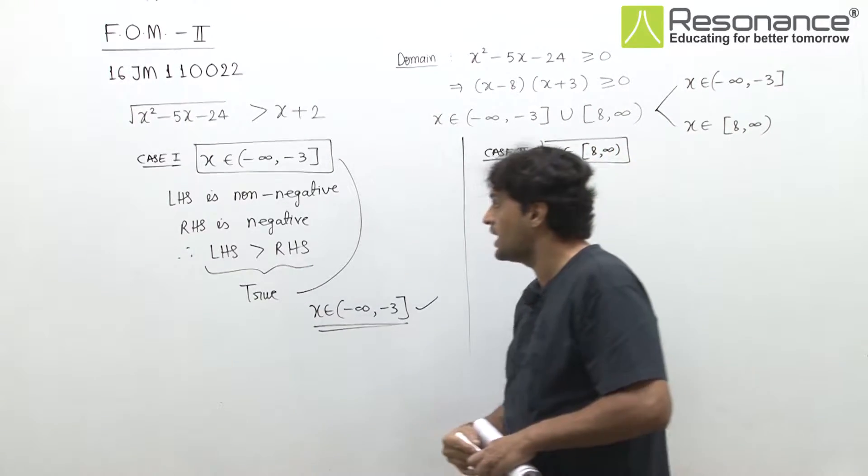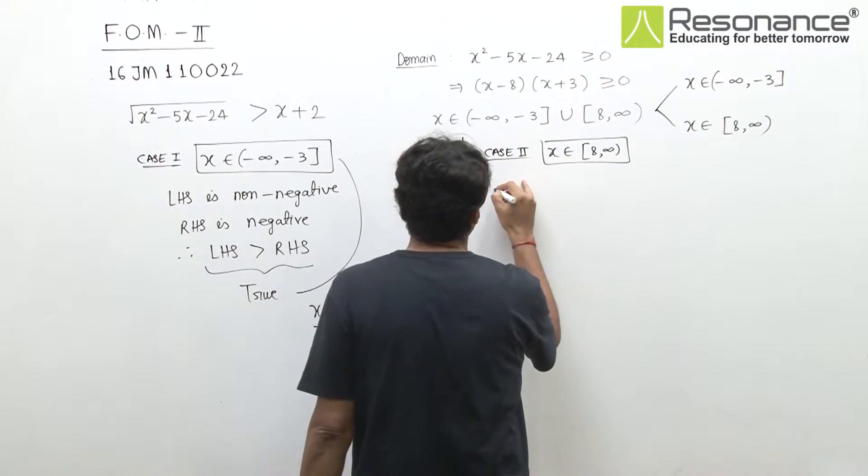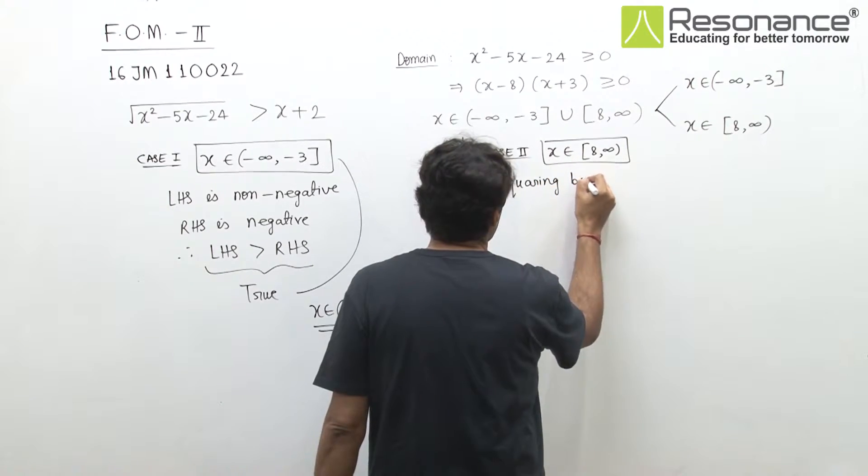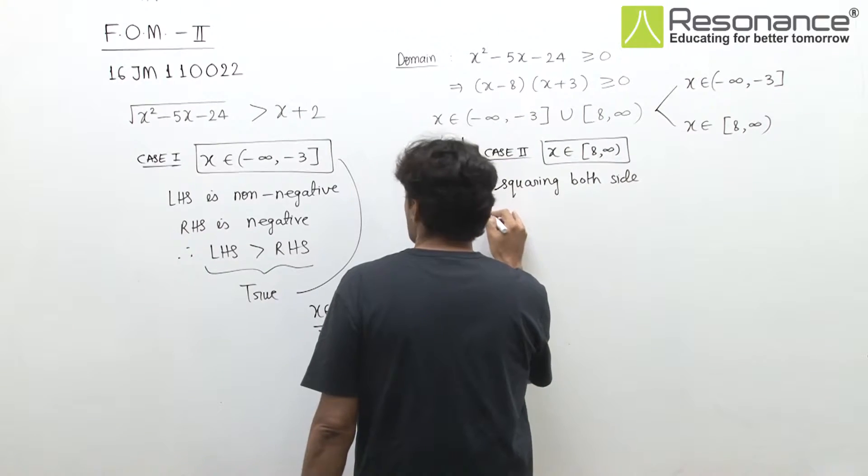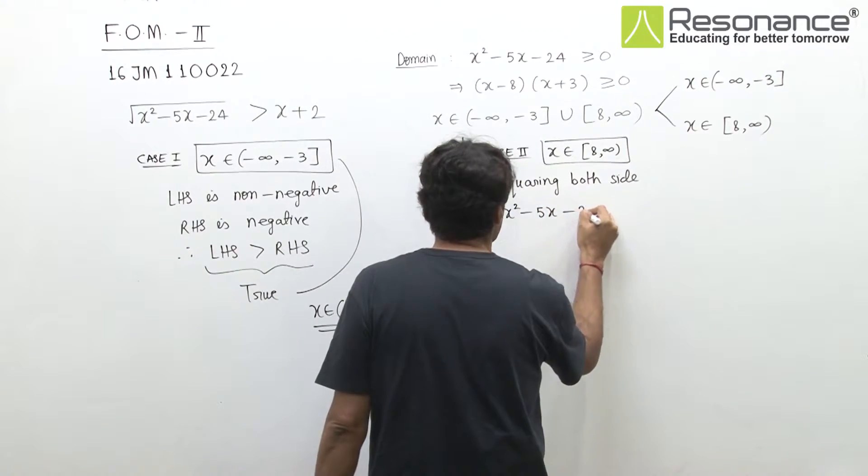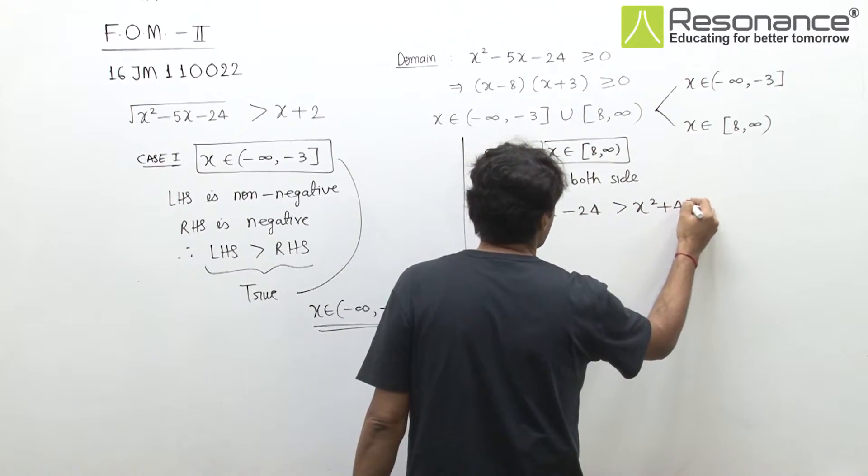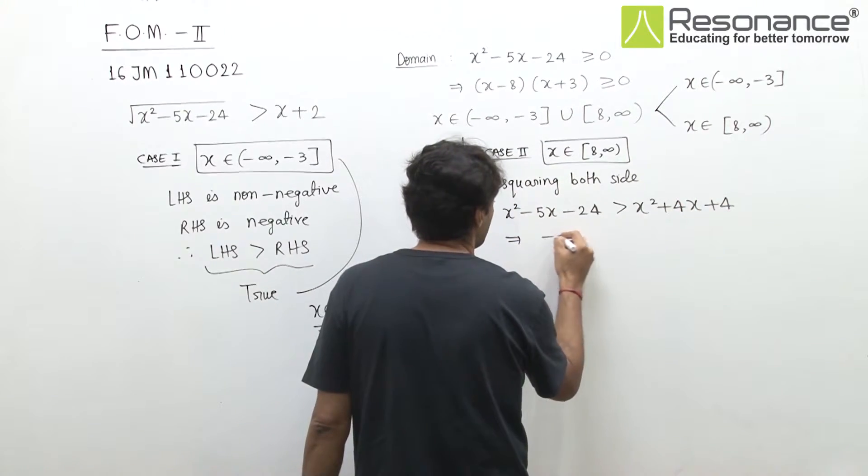In this case, RHS is also positive and LHS is non-negative, so we can square both sides. x² - 5x - 24 ≥ x² + 4x + 4. This gives us immediately...